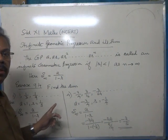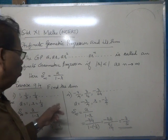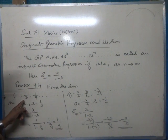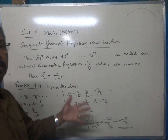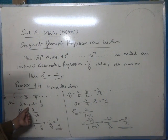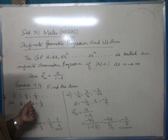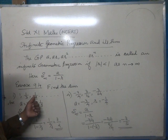We shall consider Exercise 9.4, question number 1. The series is 1, 1/3, 1/9, and so on up to infinity. The first term is 1 and the common ratio is 1/3, since 1 multiplied by 1/3 gives 1/3, and 1/3 multiplied by 1/3 gives 1/9.